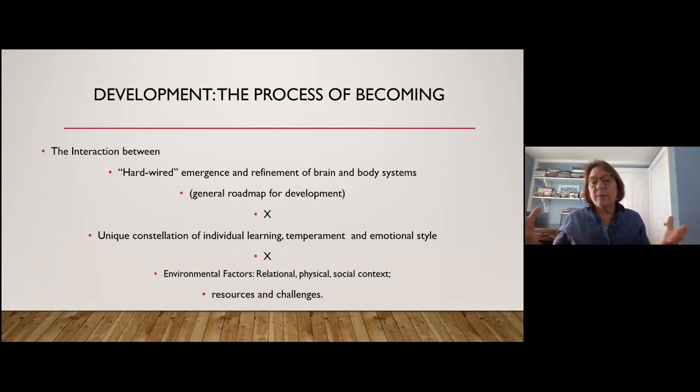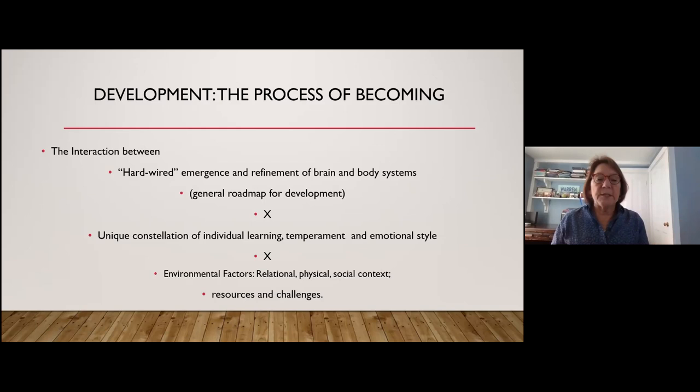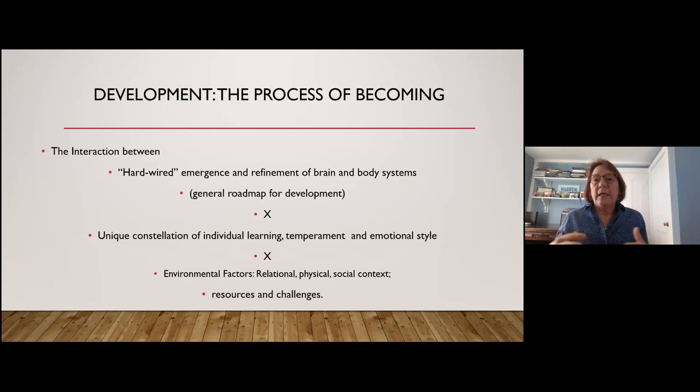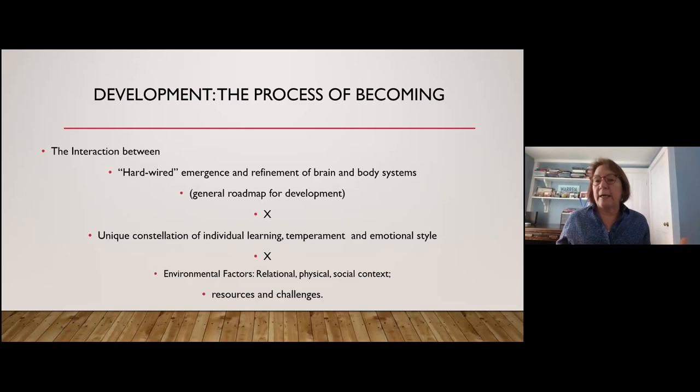That built-in roadmap means if a kid hasn't hit those milestones by those ages, we begin to worry and think about intervention. The second piece is the unique constellation of who the child is — their learning style, temperament, and emotional profile. This could include a learning disability, autism, or a proclivity or vulnerability to anxiety. Those are things that are also built in for the individual.